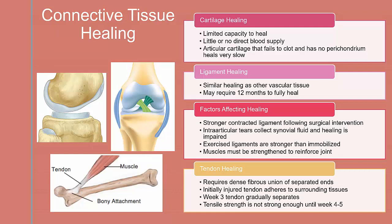Ligament healing follows a similar healing course as other vascular tissues. Proper care will result in acute repair and remodeling phases in the same time required by other vascular tissues. The repair phase will involve randomly laying down collagen that, as scar forms, will mature and realign in reaction to stress and strain. Full healing of ligaments may require a 12-month recovery process. Surgically repaired ligaments tend to be stronger due to decreased scar formation. With intraarticular tears, synovial fluid will dilute the hematoma and prevent clotting and spontaneous healing. Exercised ligaments are typically stronger, which is why we typically suggest early controlled mobilization. Muscles must be strengthened to reinforce the joint, and increased tension will increase joint stability.